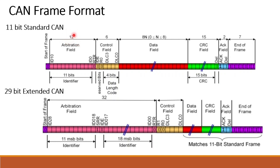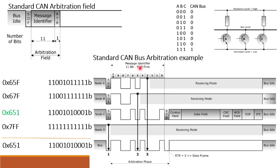The 12 bits are used in the 11-bit standard CAN and the 32 bits are used in the 29-bit extended CAN. Today we will discuss how priority is decided in the 11-bit standard CAN frame format. For extended CAN, priority is determined in a similar way.